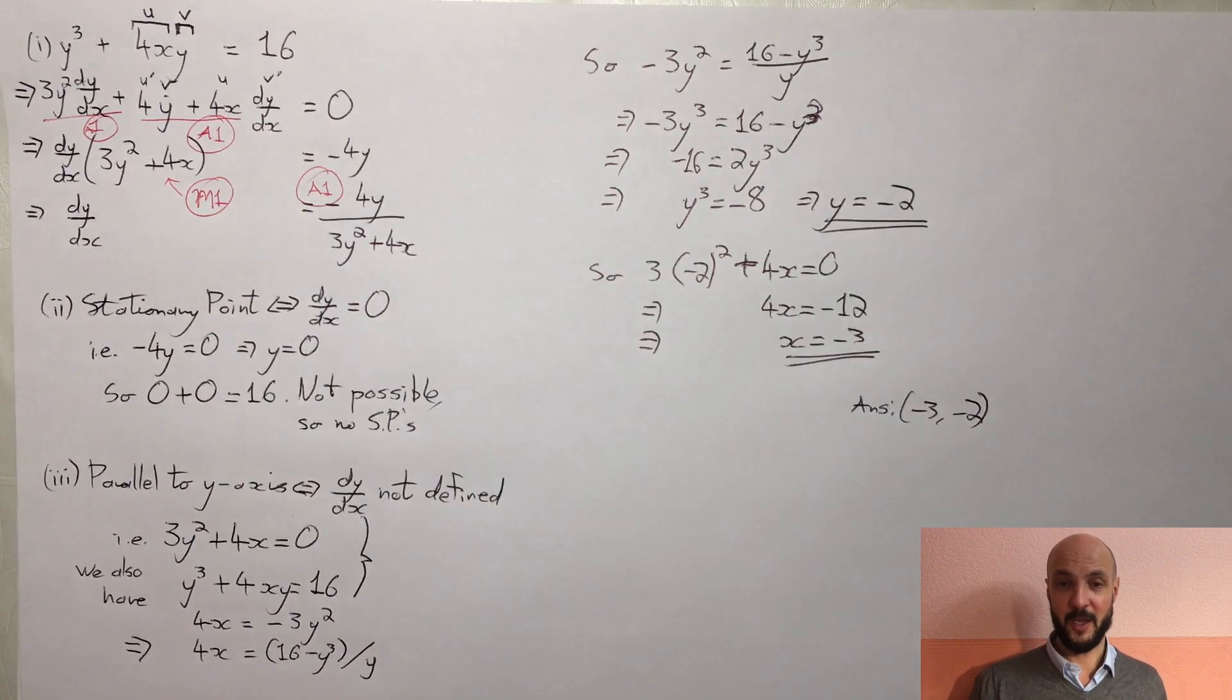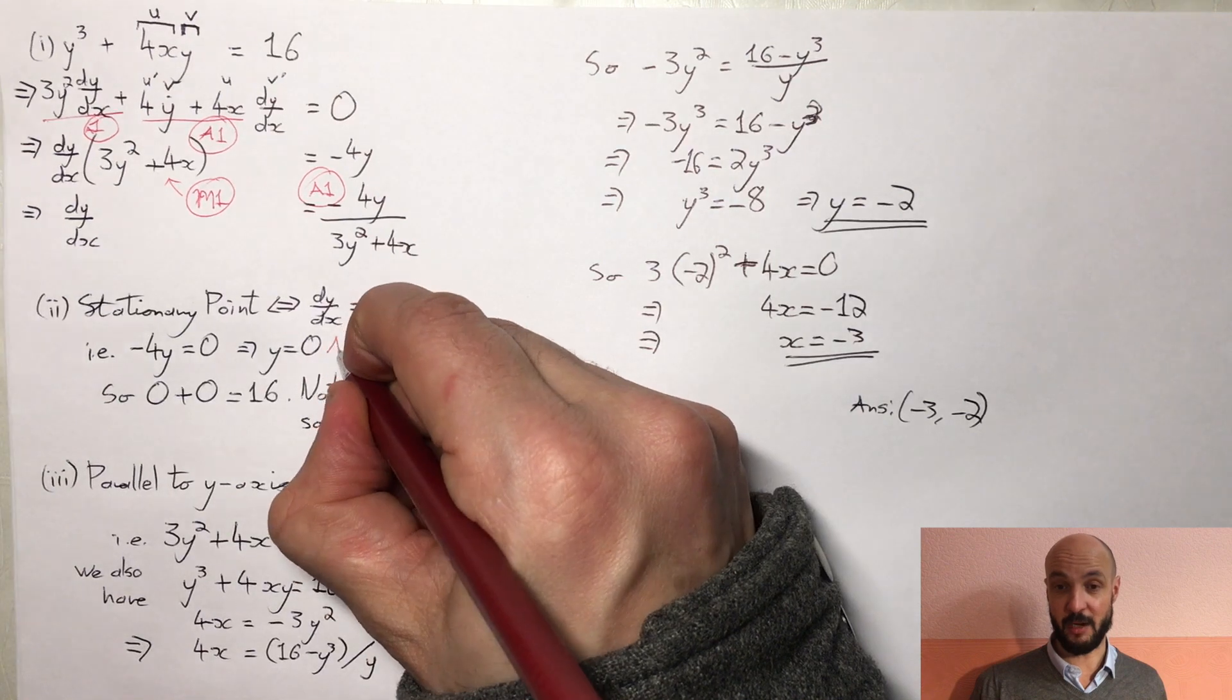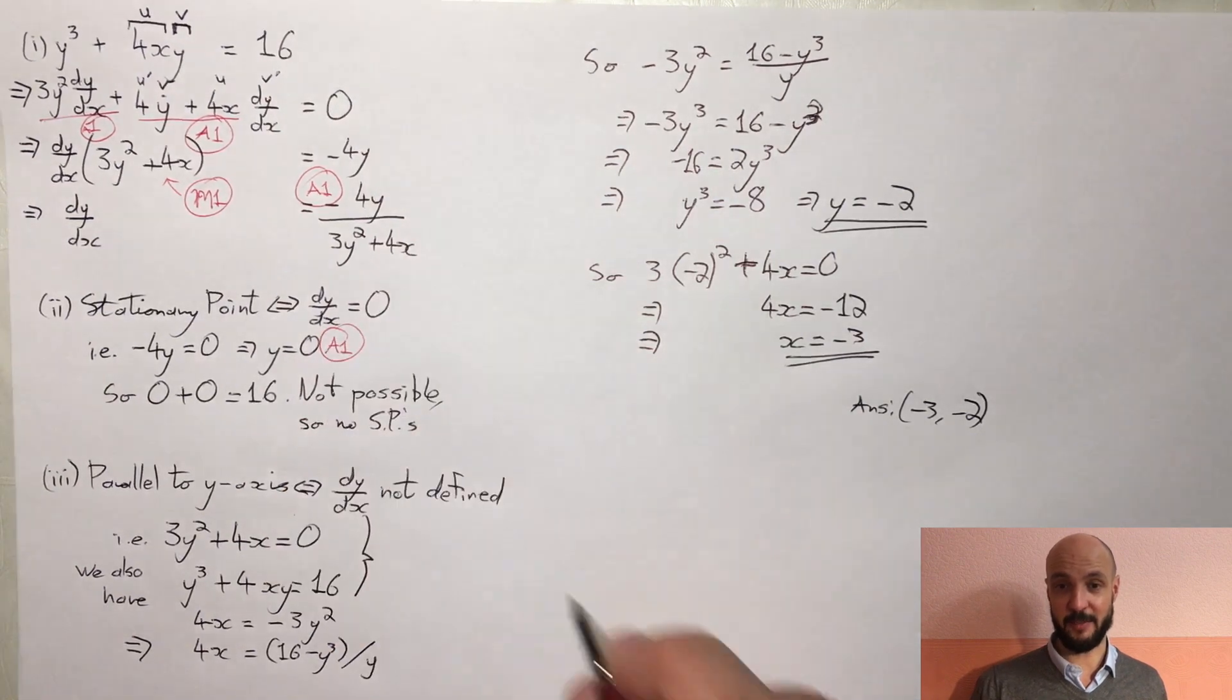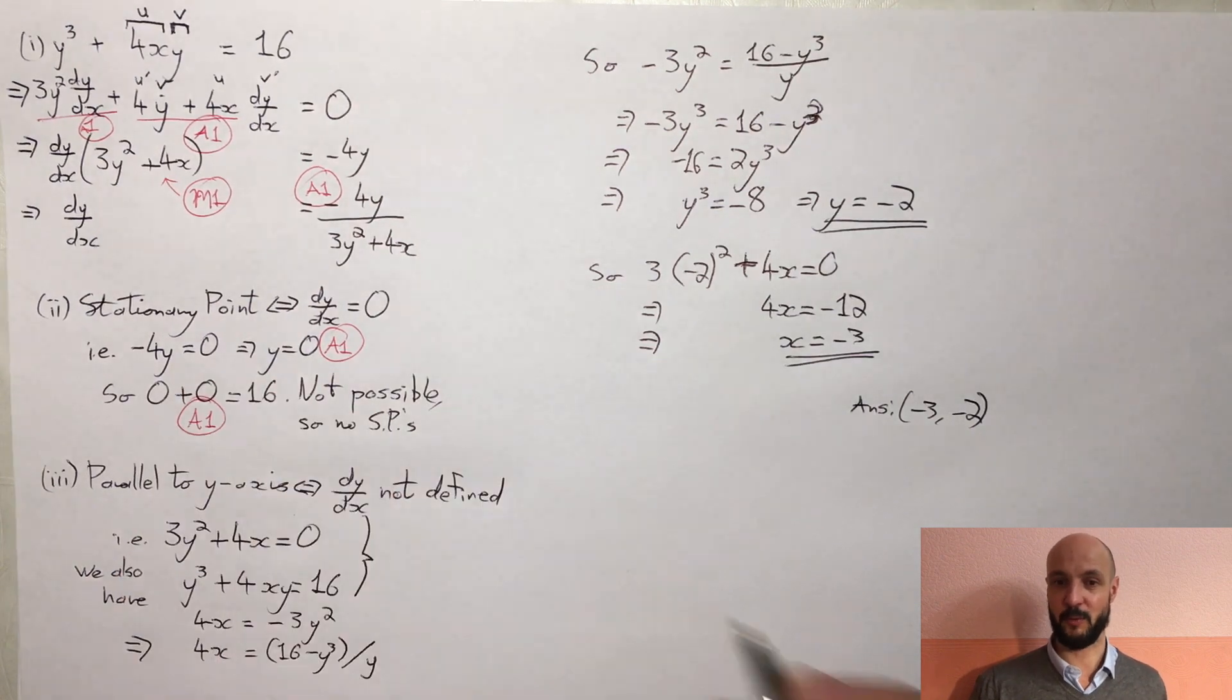Second part of the problem we got an accuracy mark for showing that y must equal 0, and a second accuracy mark for substituting that in to say this gives us 0 plus 0 equals 16 which cannot be.